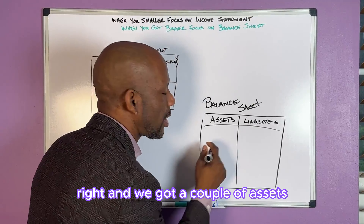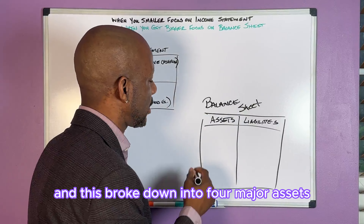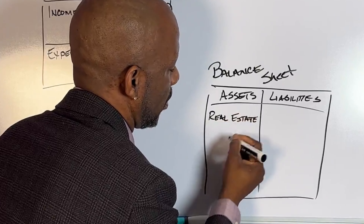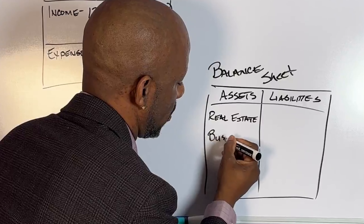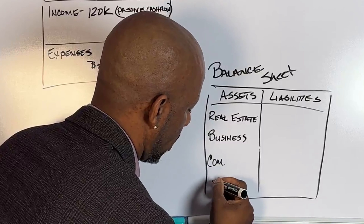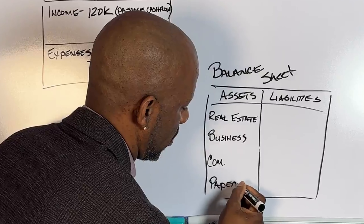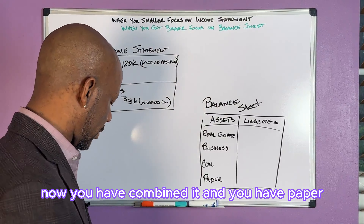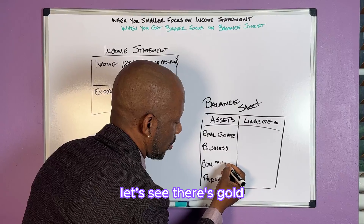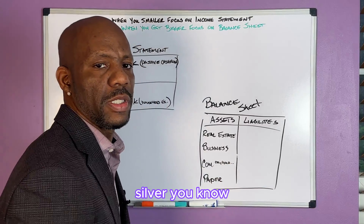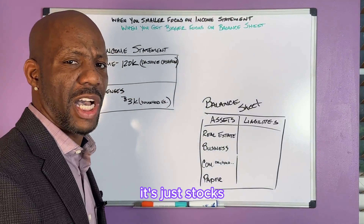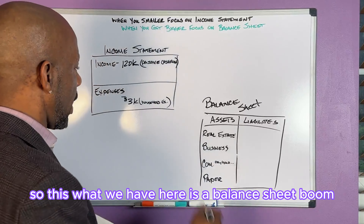For expenses, I wanted to have 3k — that's household expenses. Now on the asset column, this breaks down into four major assets: real estate, business, commodities — like gold and silver — and paper assets, which are stocks, bonds, and stuff like that.